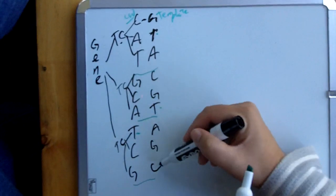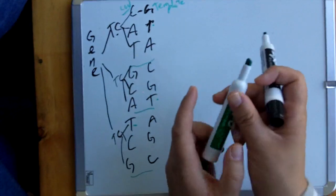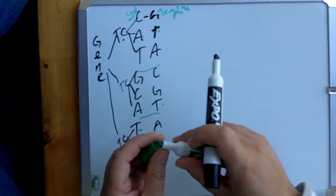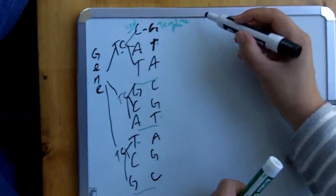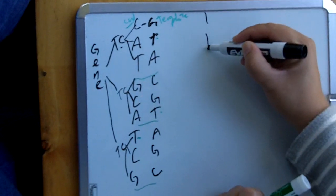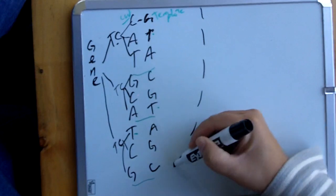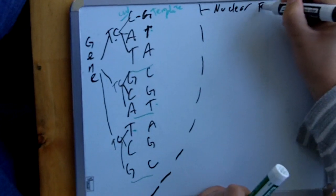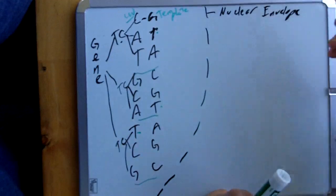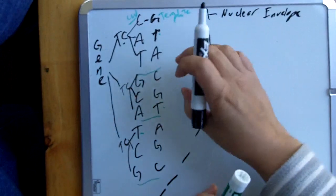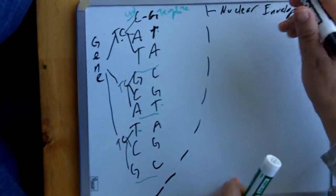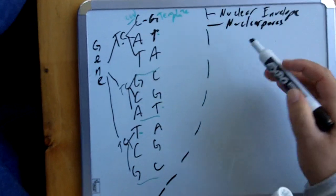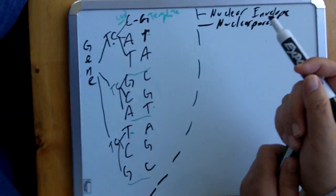This right here we call the template strand, and this right here we call the coding strand — and we say they are complementary to each other. I'm going to put a dotted line here to represent the nuclear envelope. The nuclear envelope keeps the DNA inside and everything else outside. These little holes are called nuclear pores, and the membrane is called the nuclear envelope.